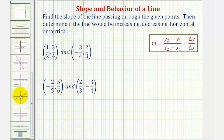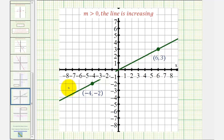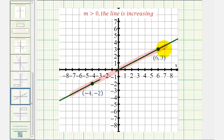If the slope is positive, the line is increasing, as we see here. Notice as x increases, y also increases. We can also read this from left to right — from left to right, the line is going up, so the slope is positive.